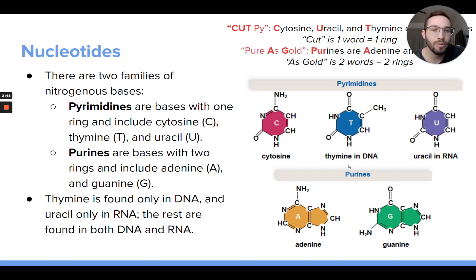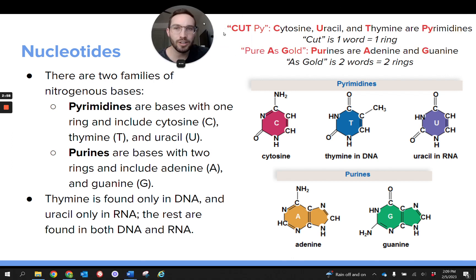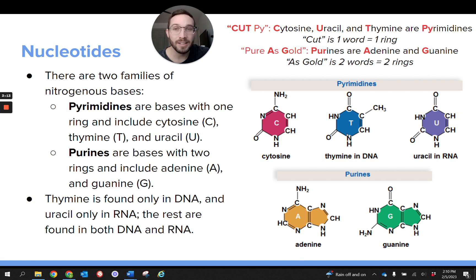Some nitrogenous bases have a one-ring structure and some have a two-ring structure. The ones with a one-ring structure are called pyrimidines, and the ones with a two-ring structure are called purines. There's a mnemonic — 'cut pi, pure as gold' — to help remember which ones are which. Also remember that thymine is found in DNA nucleotides but not in RNA, and uracil is found in RNA but not DNA.